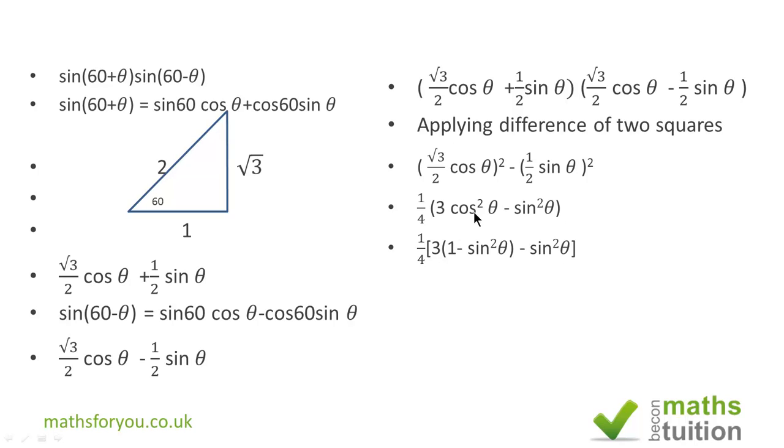And we know that cos²θ is 1 - sin²θ. And when you open up your inside brackets, we have 1/4(3 - 3sin²θ - sin²θ). Now, -3sin²θ - sin²θ will give you -4sin²θ.